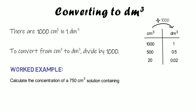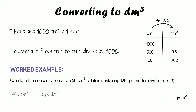Here's an example: calculate the concentration of a 750 cm³ solution containing 125 grams of sodium hydroxide, giving the answer in grams per decimetre cubed. First convert: 750 divided by 1000 gives 0.75 dm³. Then do mass divided by volume: 125 divided by 0.75, which gives 166.7 grams per decimetre cubed.